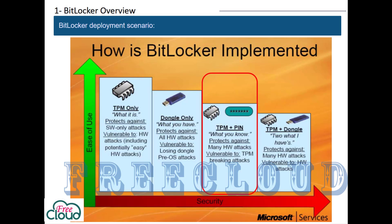TPM plus PIN: in addition to the protection that the TPM provides, BitLocker requires the user to enter a PIN, because the data on the encrypted volume cannot be accessed without entering the PIN. TPM plus Dongle, or TPM with a startup key: in addition to the protection that TPM only provides, part of the encryption key is stored on a USB flash drive referred to as a startup key, and the data on the encrypted volume cannot be accessed without the startup key.